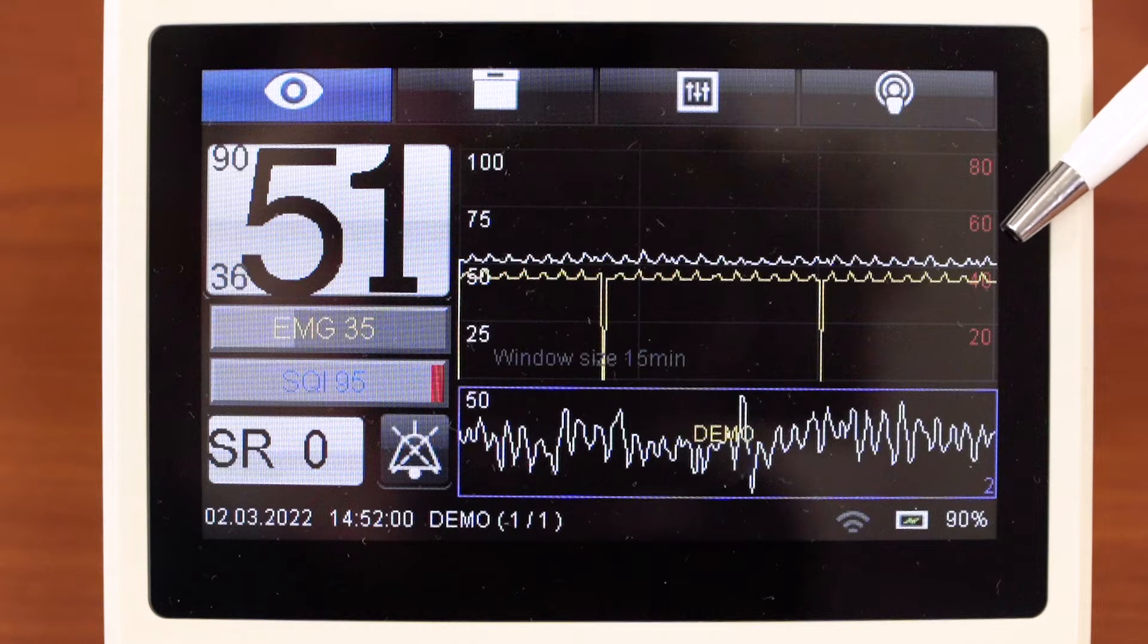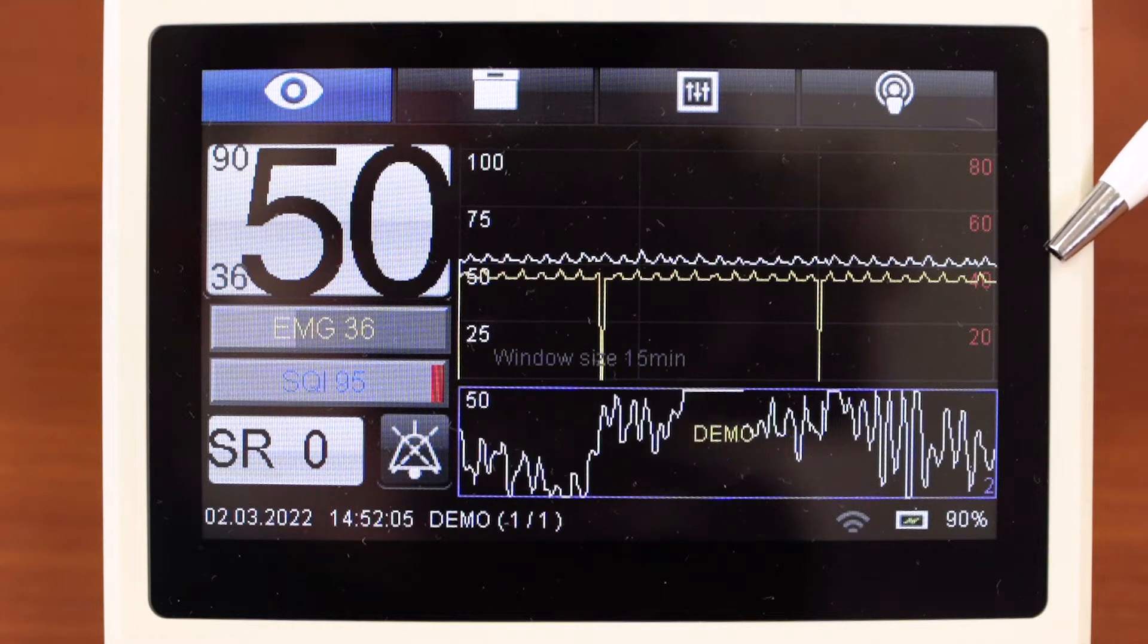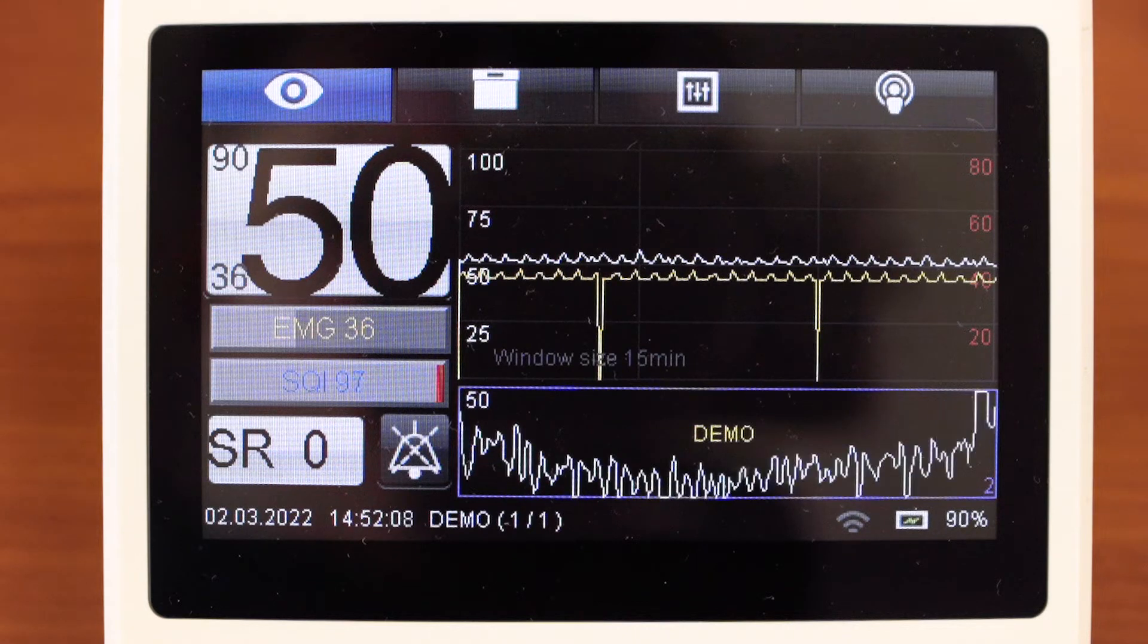There are activity index graph white and electromyography component graph yellow. We can add to the screen other graphs.